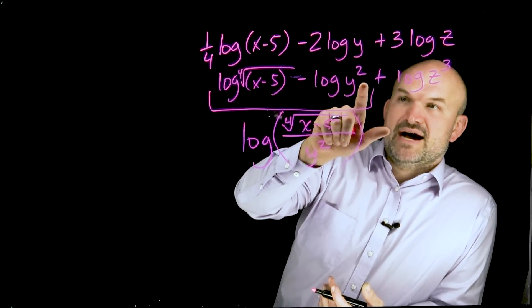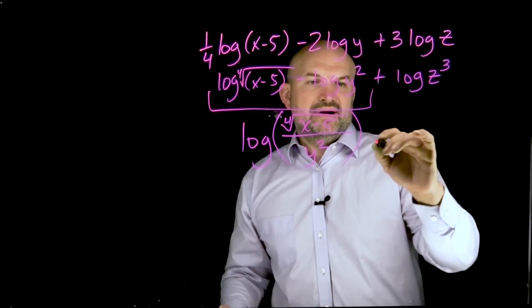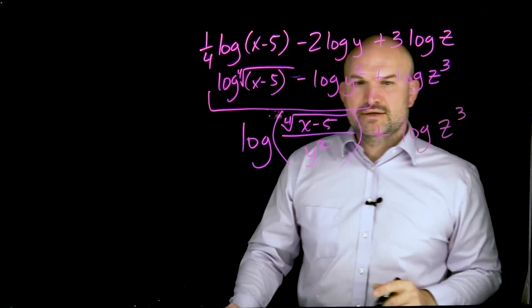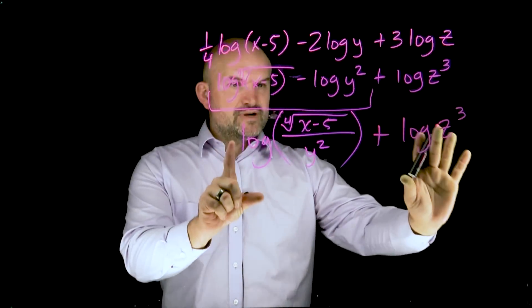And then again, notice my subtraction represents my divisor. But I still have this plus log of z cubed. So now I recognize I can rewrite this as a product. Where am I going to multiply the z cubed to? Do I multiply it by the numerator or the denominator?